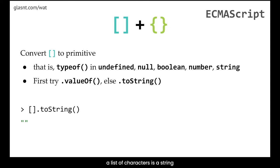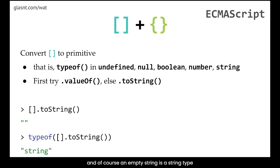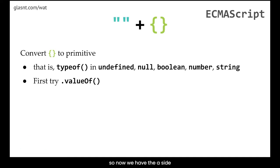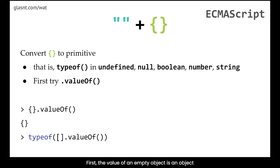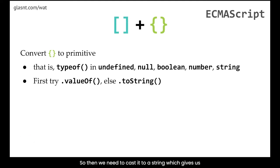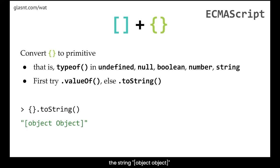Let's step through the concatenation of an empty array and an empty object. First, convert the empty array to a primitive: the value of an empty array is an object, so we cast it to a string, which gives us an empty string — which makes sense, since a list of characters is a string in many languages. Now for the empty object: its value is also an object, so we cast it to a string, which gives us the string 'object object'.